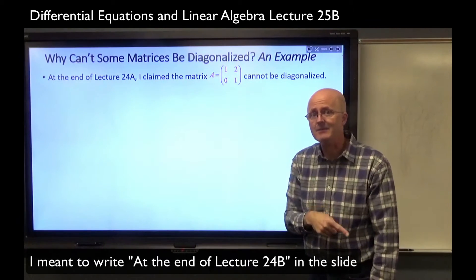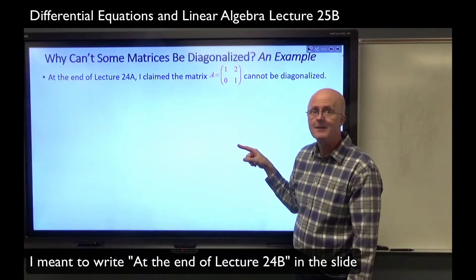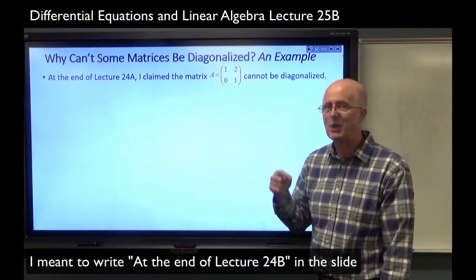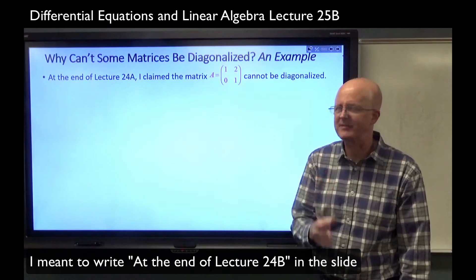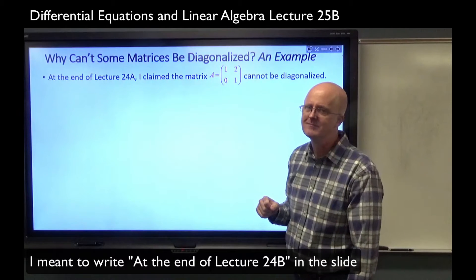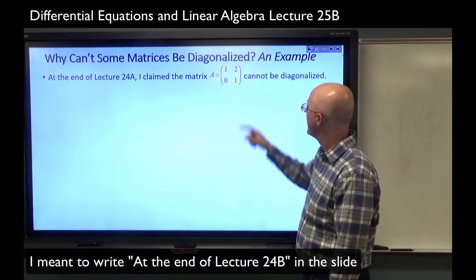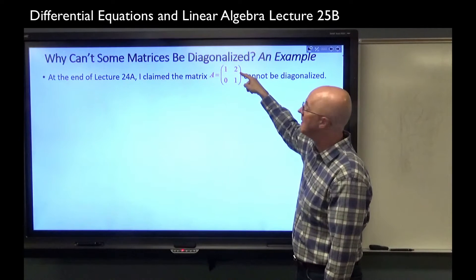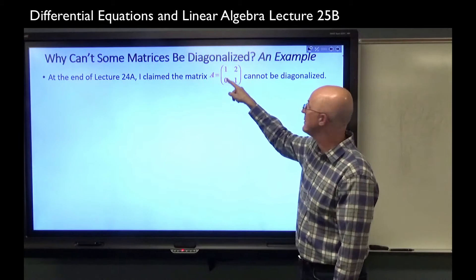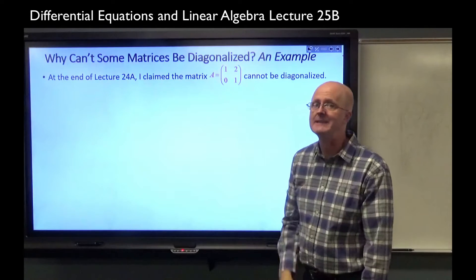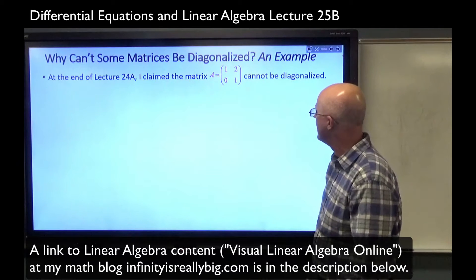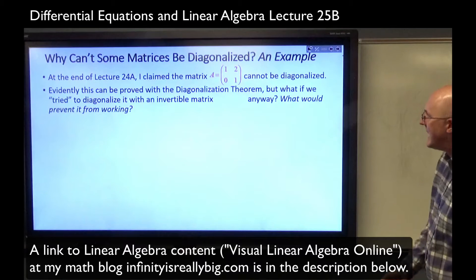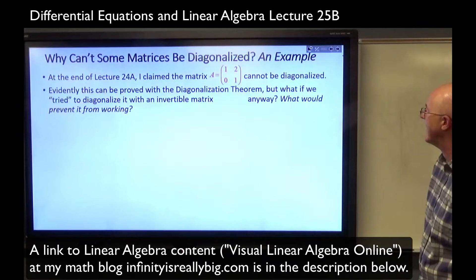Its eigenvalues are on the main diagonal — they're both one. There's only one eigenvalue: the number one. And it occurs with multiplicity two. I can put any non-zero number in the off-diagonal entry, and the resulting matrix with ones on the diagonal and a zero in the lower-left will not be diagonalizable. That can't be diagonalized, and in lecture we should be able to prove that with the diagonalization theorem.